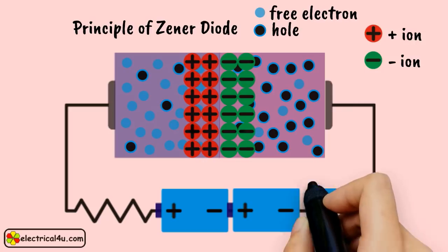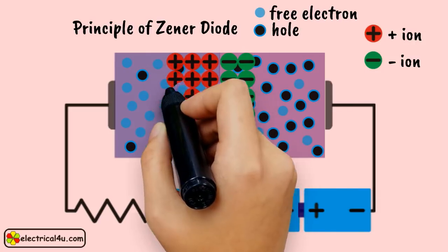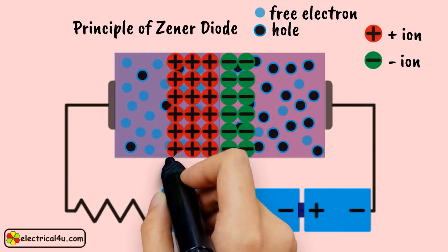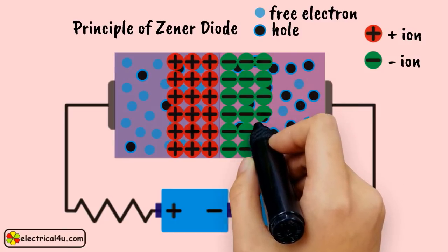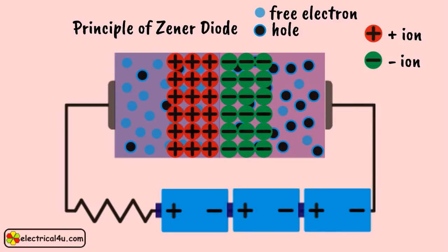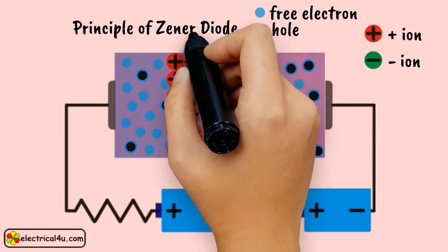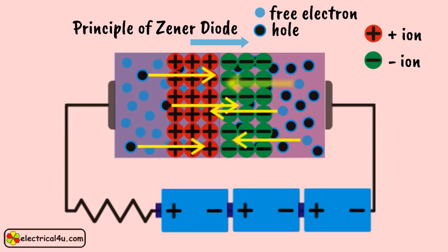If this reverse biased voltage across the diode is increased continually, the depletion layer becomes more and more wider. At the same time, there will be a constant reverse saturation current due to minority carriers.